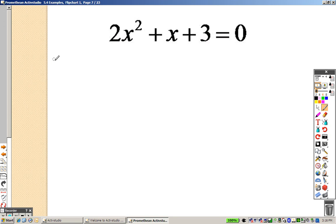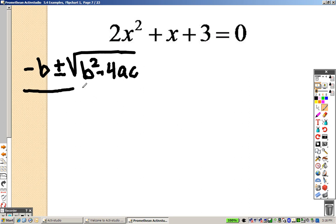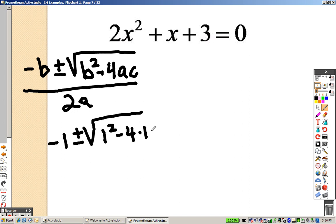So, we're going to use the quadratic formula. Formula is negative b plus or minus the square root of b squared minus 4ac over 2a. So, it's negative 1 plus or minus the square root of 1 squared minus 4 times 1 times 3 all over 2 times 2 because a is 2. Oops, sorry. A is 2, so that means that's a 2.